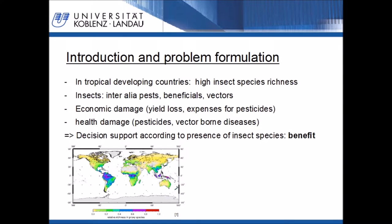In tropical and subtropical regions, we can find a high biodiversity in general. Especially the group of insects is the most diverse group of animals on the planet, including more than a million described species and representing more than half of all known living organisms. Thus, a local farmer is confronted very often with insects, e.g. butterflies and caterpillars, ants, termites and other insects.